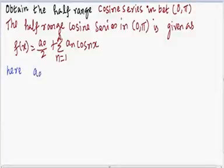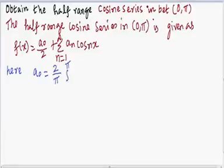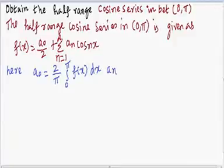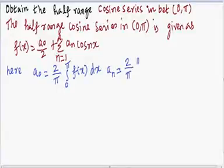Here a0 will be equal to 2 divided by pi, integral of 0 to pi, f(x) dx. And a_n will be equal to 2 divided by pi, integral of 0 to pi, f(x) into cos(nx) dx.